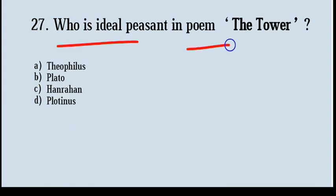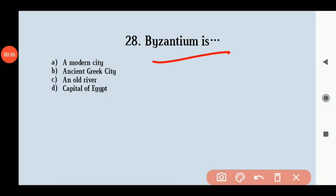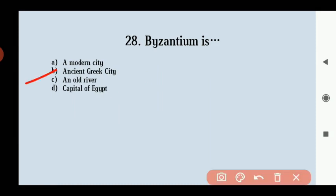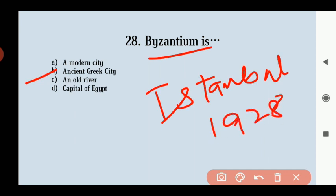Who is the ideal figure present in the poem 'The Tower'? Options: Theophilus, Plato, Henry Han, Plotinus. Correct answer: option number C, Henry Han is the ideal present in the poem 'The Tower'. Additionally, Byzantium — referenced in a Yeats poem first published in the 1928 collection 'The Tower' — was an ancient Greek city that is now Istanbul.